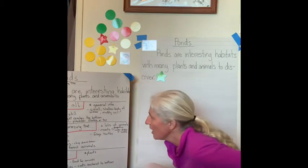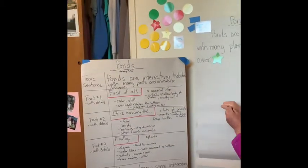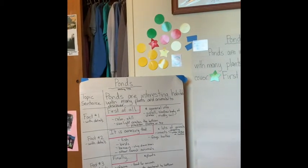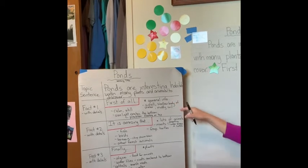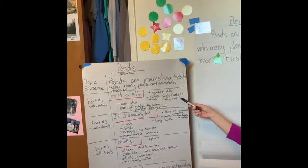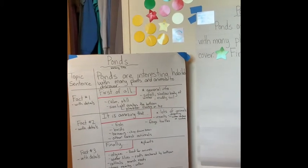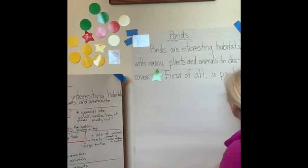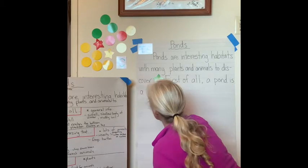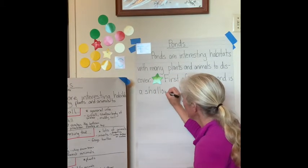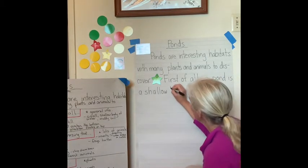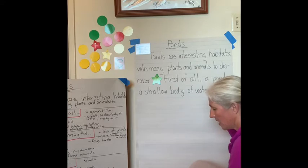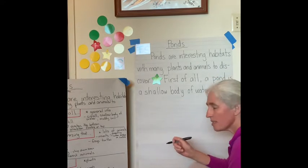First of all, a pond is a shallow body of water. I'm putting a period — that is the end of my complete sentence. Now I'm going to keep giving general information. Because it is shallow, sunlight can reach the muddy bottom. Remember to sound out your words. Sunlight is a compound word. Sunlight can reach the muddy bottom. And one more: the water in a pond is calm and still.